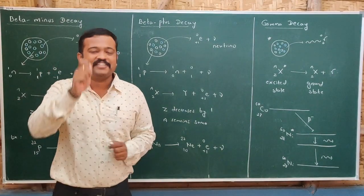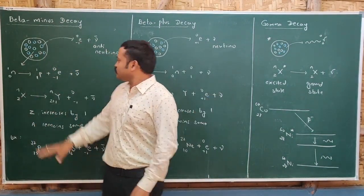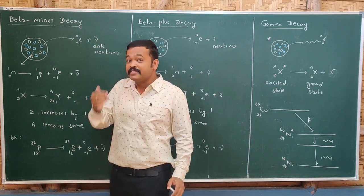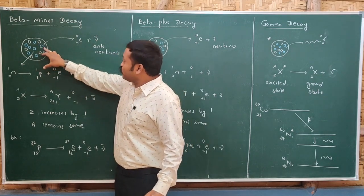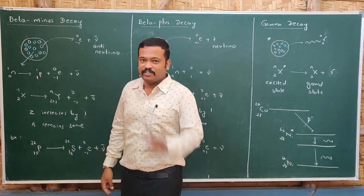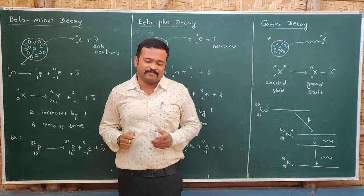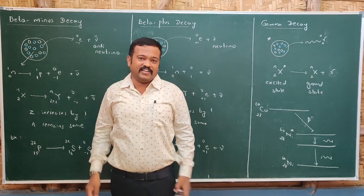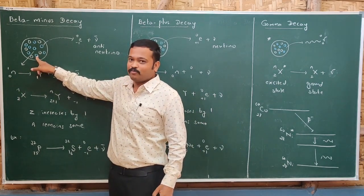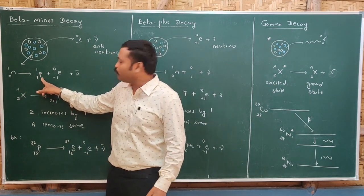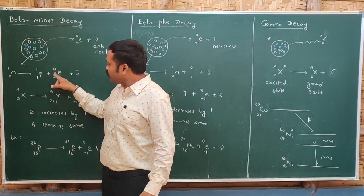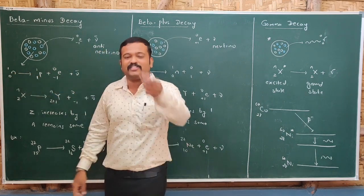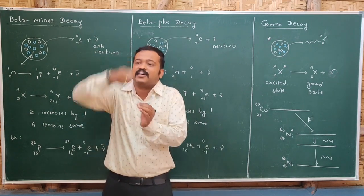Let us understand beta decay. Beta decay is of two types: beta minus and beta plus. In beta minus decay, the number of neutrons is greater than the number of protons, making the nucleus unstable. From this nucleus, an electron is emitted along with an anti-neutrino. The question arises: since an electron is not present inside the nucleus, how can it emit one? During beta minus decay, the electron is generated inside the nucleus. Since the number of neutrons is greater than the number of protons, a neutron converts into a proton. To balance charge and mass — neutron has charge 0 and mass 1, proton has charge 1 and mass 1 — a particle with charge minus 1 and mass 0 is needed, which is the electron. That is how the electron is generated inside the nucleus and emitted.